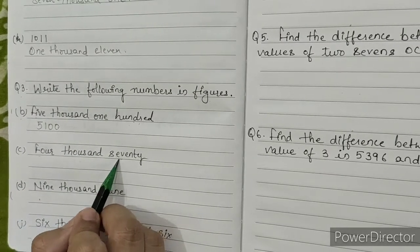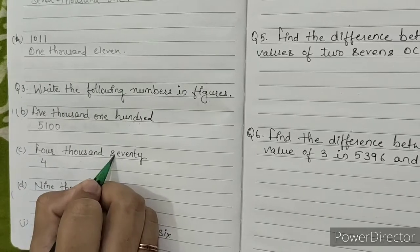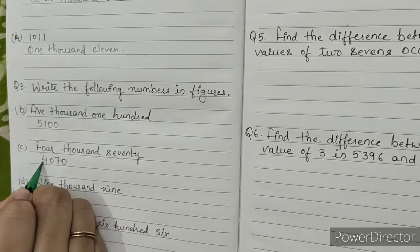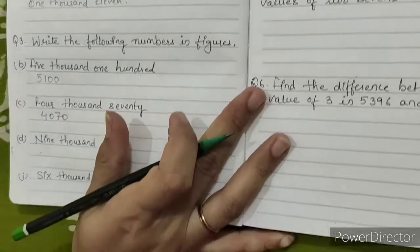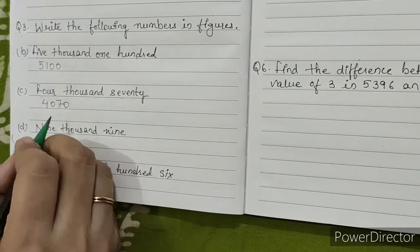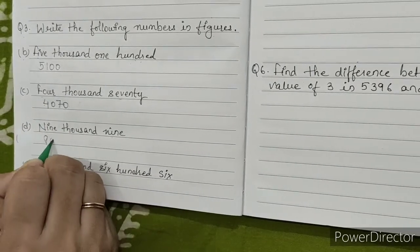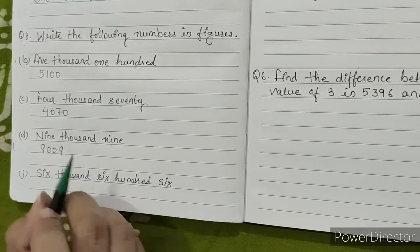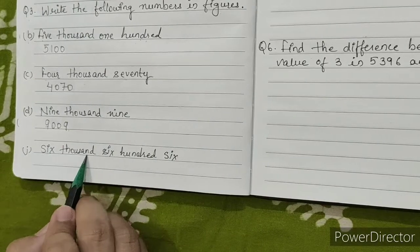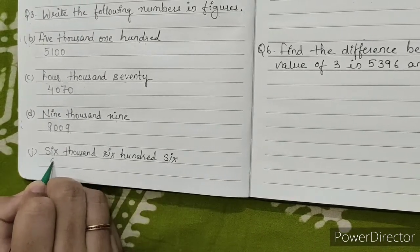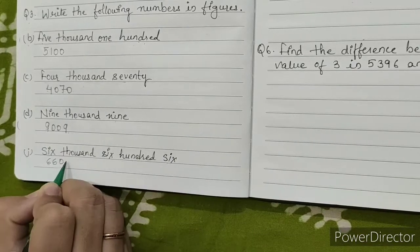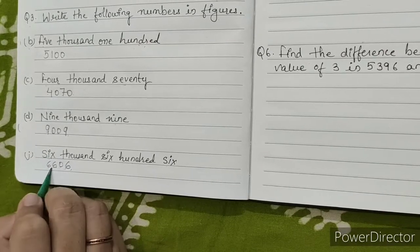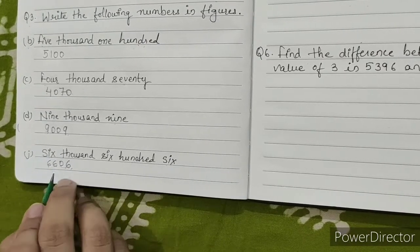4,070. We will write 4, then 0, 7, 0. 1 stands for thousands — 4,070. This is our answer. D: 9,009. We will write 9,009. 1 stands for thousands — 9,009. This is our answer. Next: 6,606. We will write 6,606. 1 stands for thousands — 6,606. This is our answer.